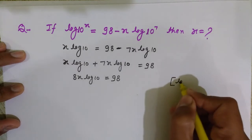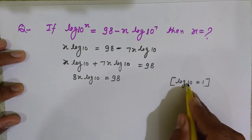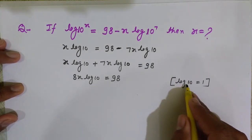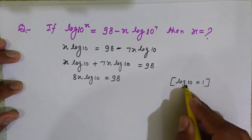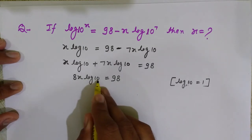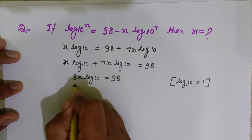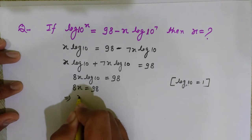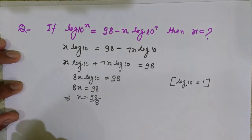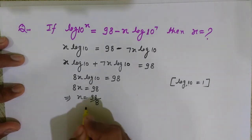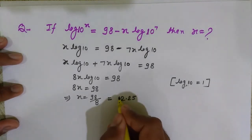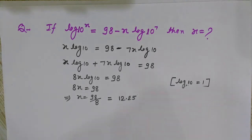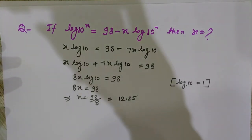Since log of 10 — when nothing is written in the base it is base 10, and log of 10 to the base 10 equals 1, because log of a to the base a equals 1 — so log 10 equals 1. Therefore 8x equals 98, which implies x equals 98 divided by 8, which comes out to be 12.25. So this is the value of x.